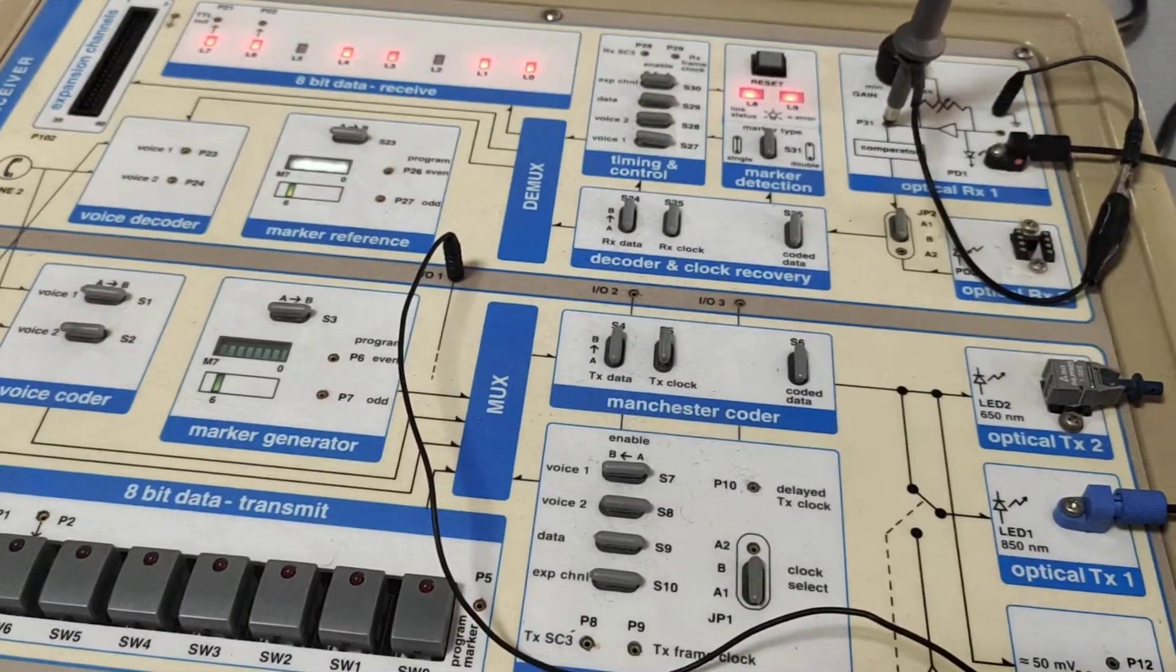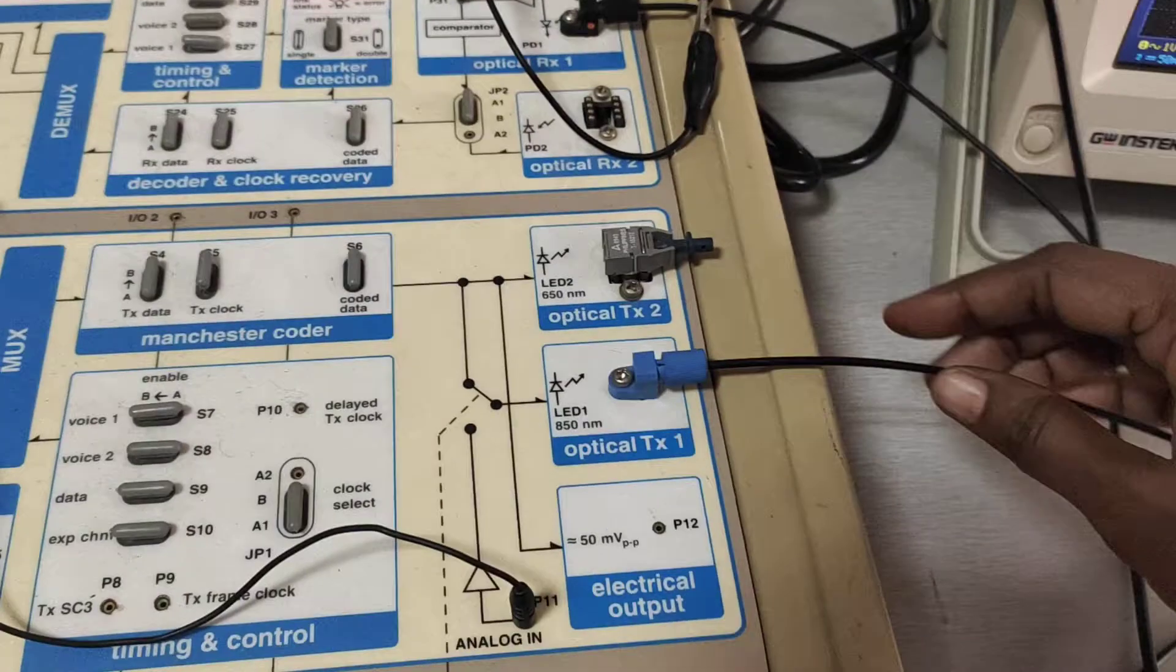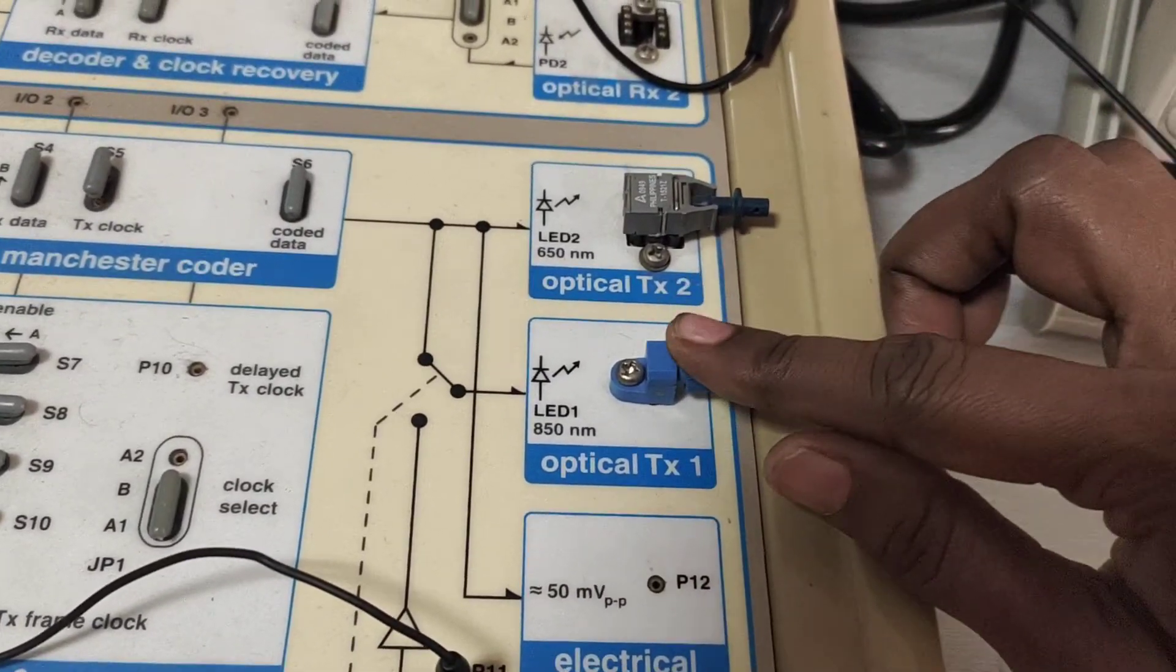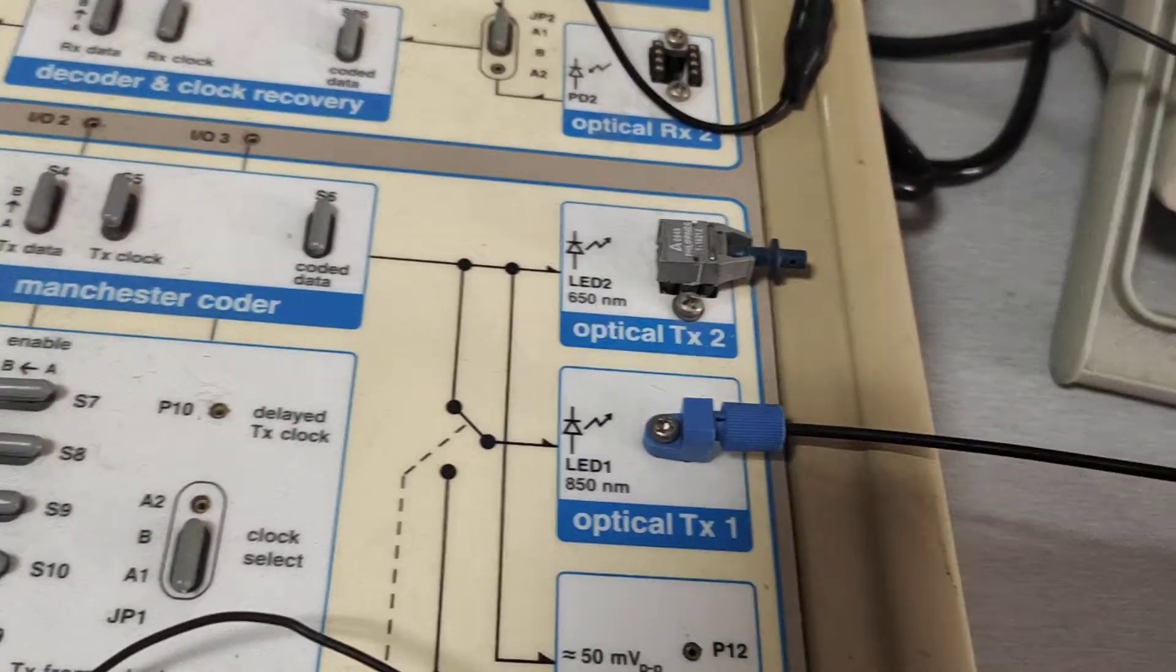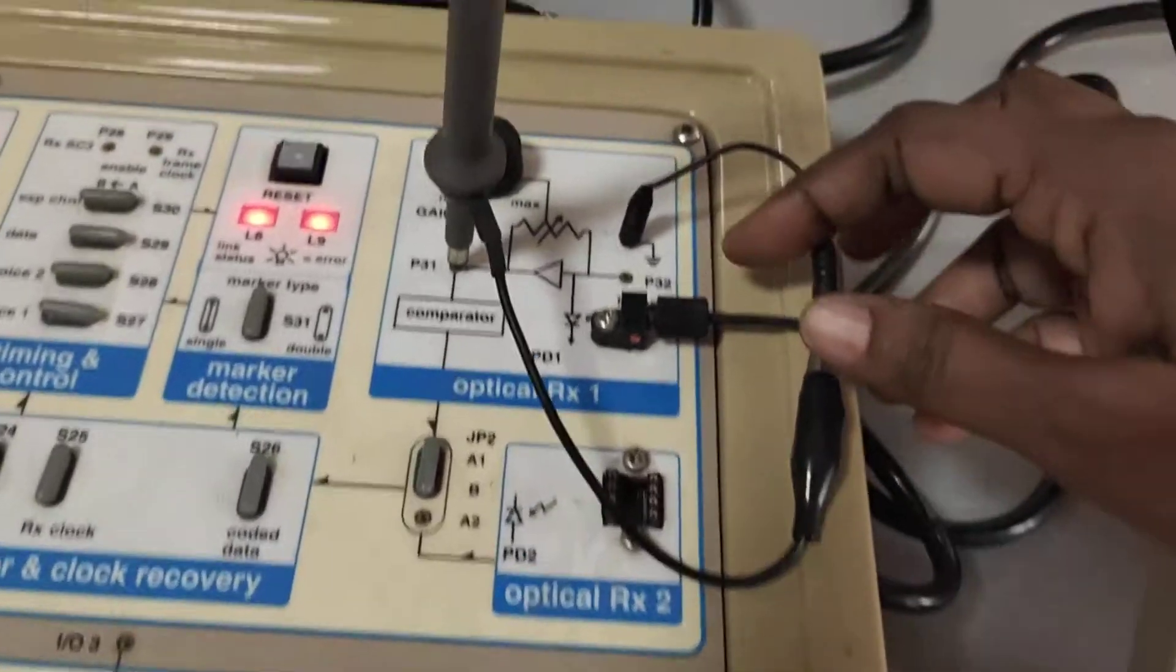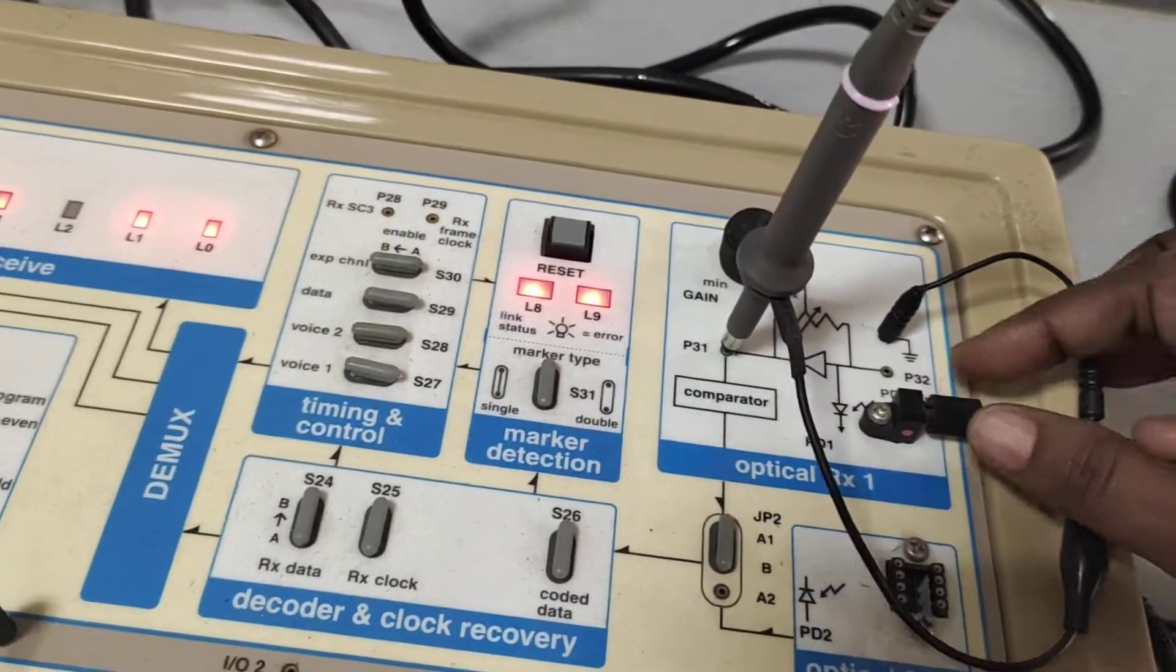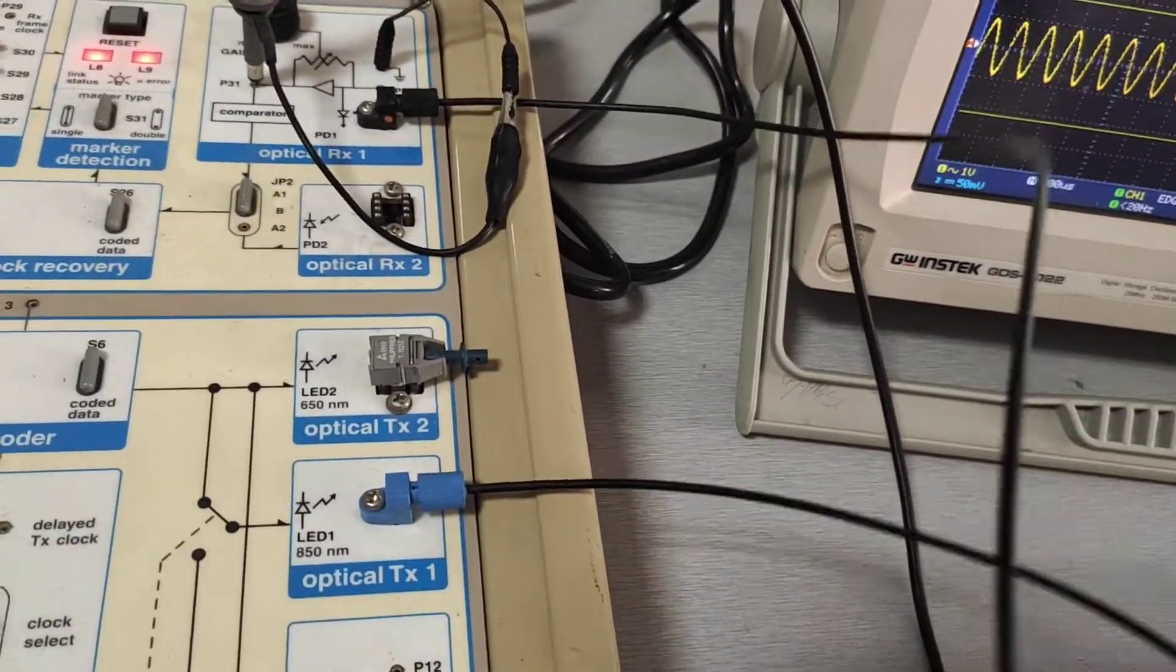First, we are going to connect 1 meter length of optical fiber to transmitter 1, 850 nanometer. One end of the cable is connected to the transmitter and another end of the cable is connected to optical receiver 1, PD-1. We are going to analyze the performance of the optical fiber.